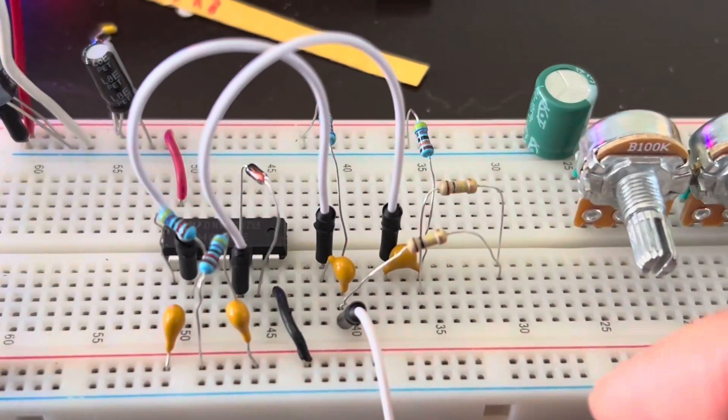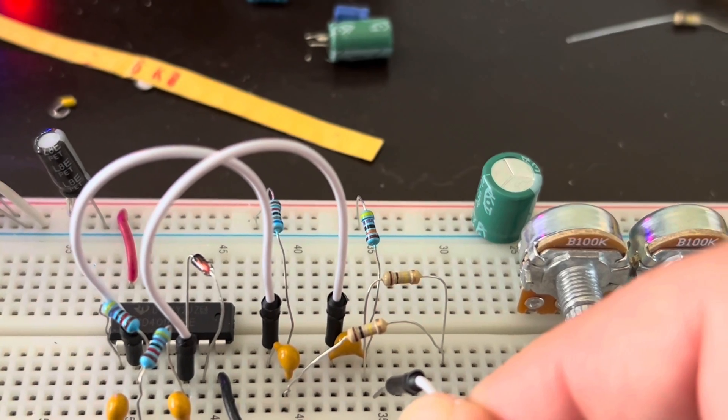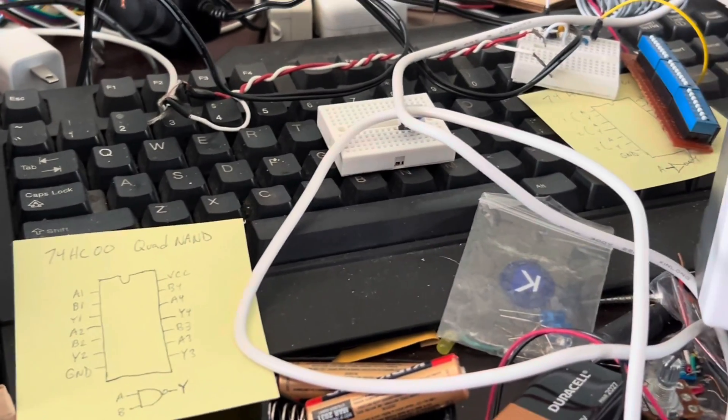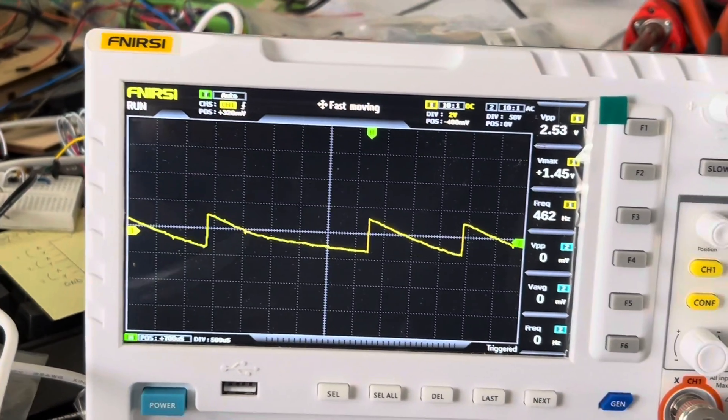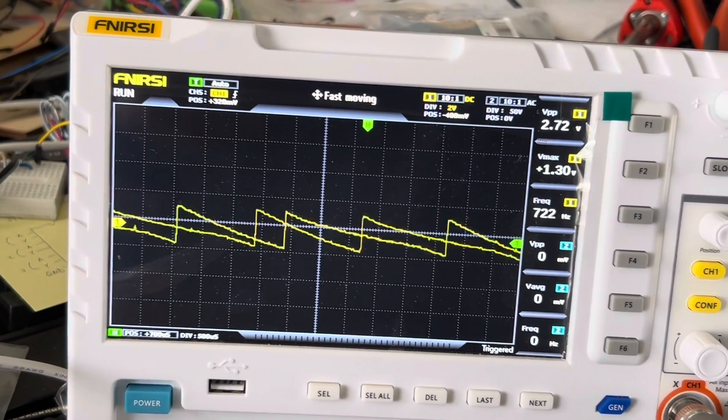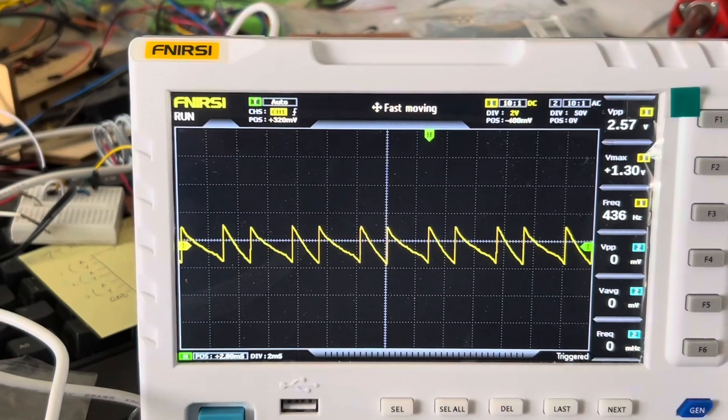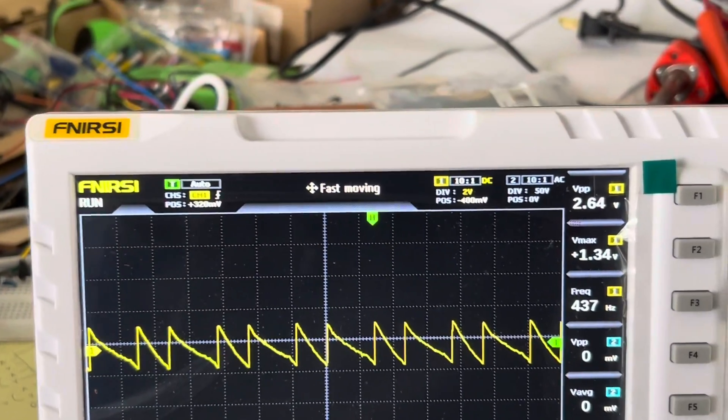Now, from the other one, the output running through a capacitor and pull-down resistor to get rid of the DC offset, I have this output, which is basically a sawtooth wave. It's a little finicky right there. Let's make it better, more stable. There we go. It's a 2.68 volt peak-to-peak sawtooth wave.